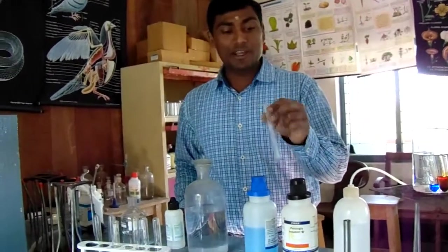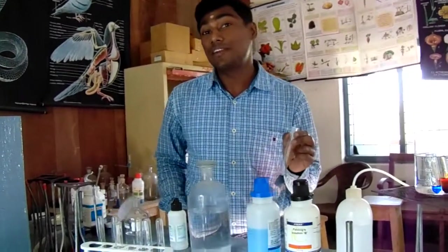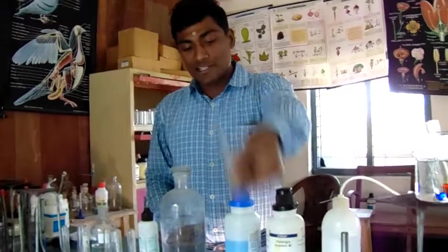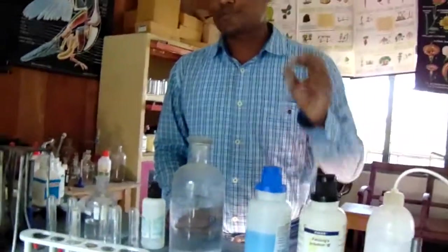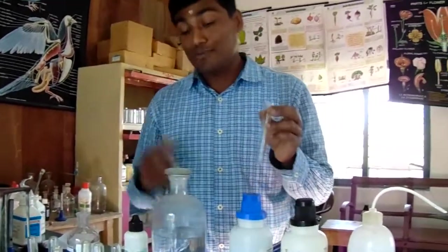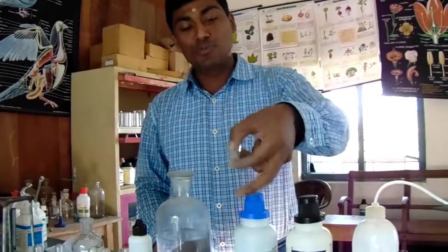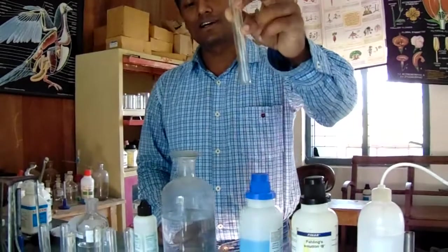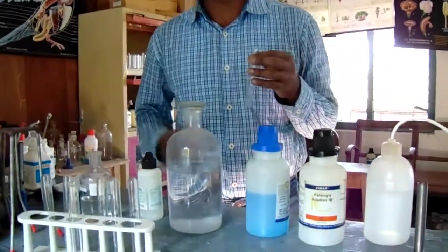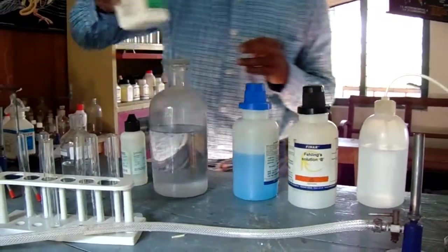Good morning everybody. Today we are going to see three interesting color-changing reactions. First, the group test for Group 1 radicals. As you know, lead is present in Group 1, so we will test for the presence of lead in any solution.